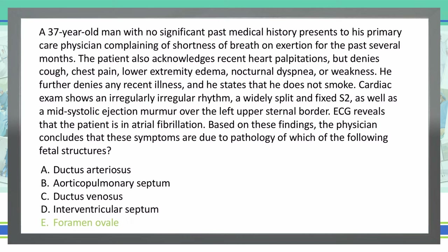A patent foramen ovale can cause palpitations — that's the sensation of atrial fibrillation. And as mentioned with Bret Michaels, it can cause stroke in patients from the venous side of the body, known as a paradoxical embolus. One other thing to note: the aorticopulmonary septum is a derivative of the truncus arteriosus from fetal life.